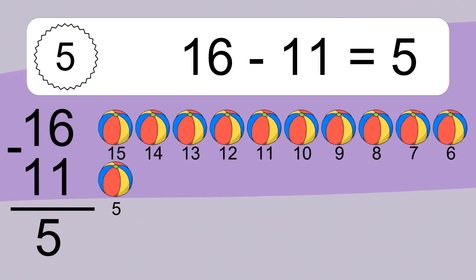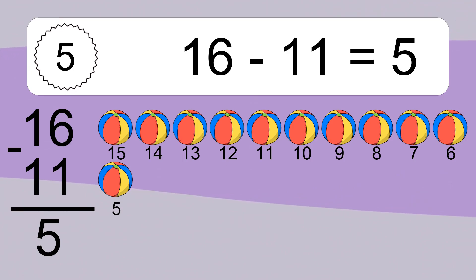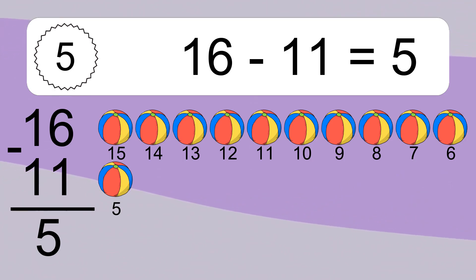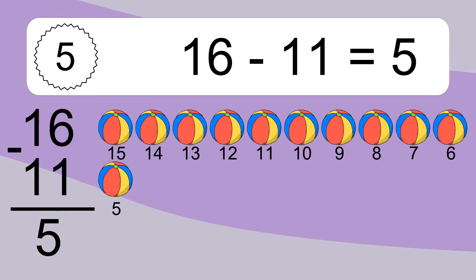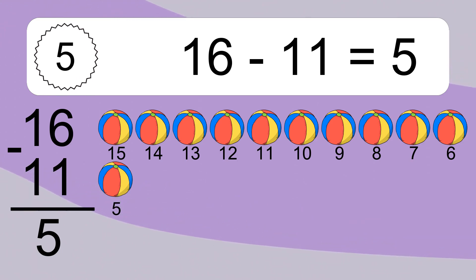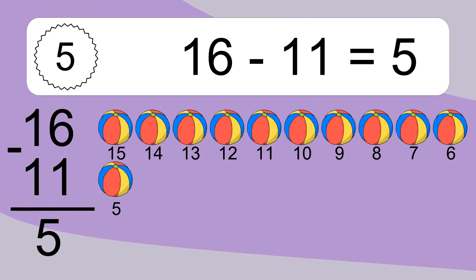16 minus 11 equals what? 16 minus 11 equals 5. Let's count it: 15, 14, 13, 12, 11, 10, 9, 8, 7, 6, 5.